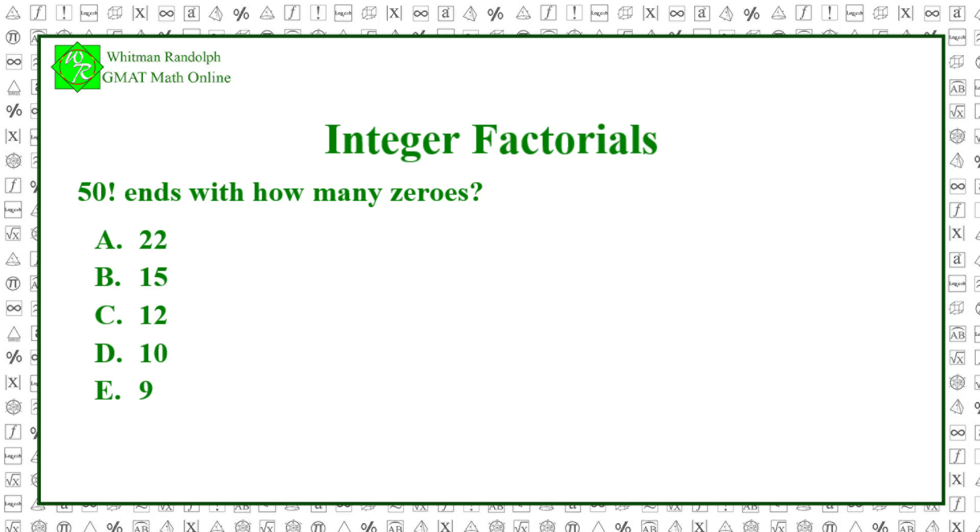So to calculate the number of zeros at the end of 50 factorial, we need to know how many numbers divisible by 5 are in the 50 numbers. Obviously, there are 10 of them: 5, 10, 15, 20, and so forth up to 50.